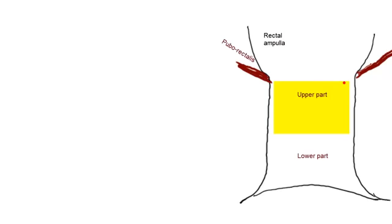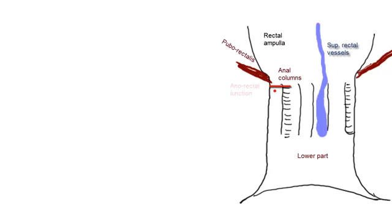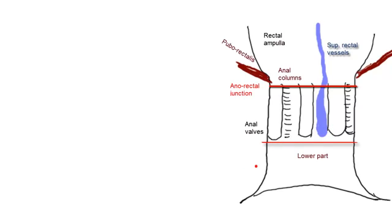The inside of the anal canal can be described as an upper part and a lower part. The upper part is characterized by the presence of anal columns — longitudinal ridges in the superior half of the mucous membrane. They contain the terminal branches of the superior rectal artery and vein. The lower ends of the anal columns are joined by anal valves, and this comb-shaped limit marks the pectinate line.